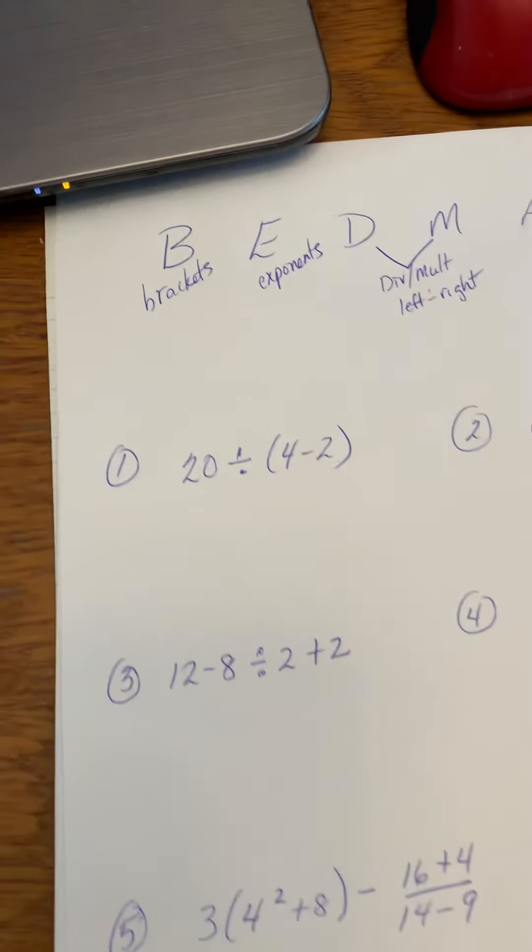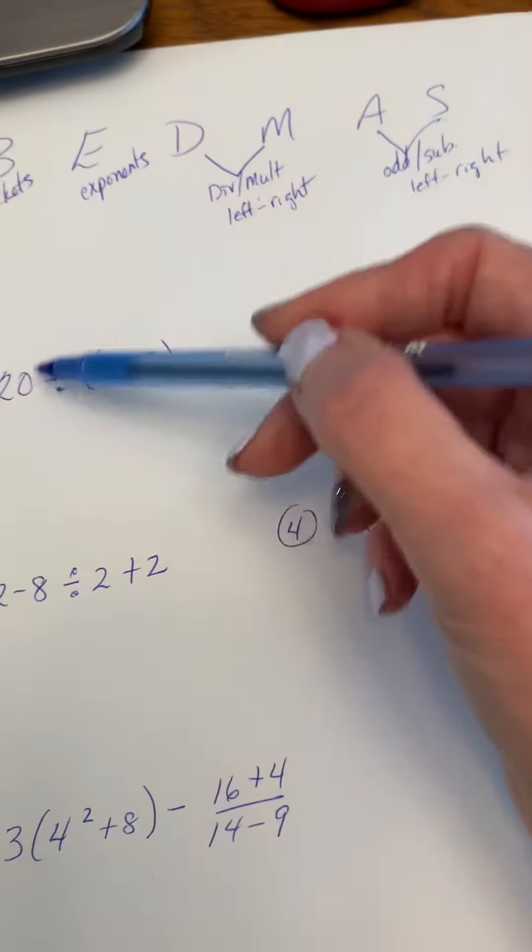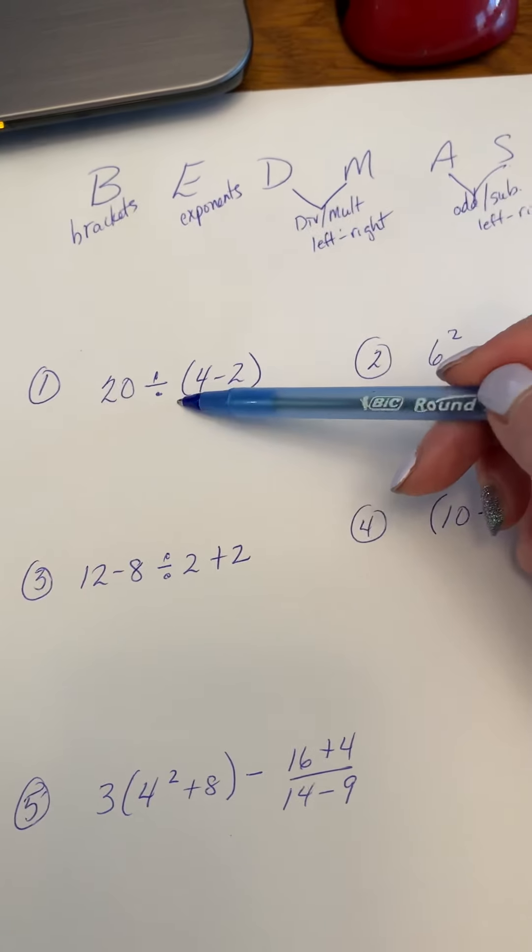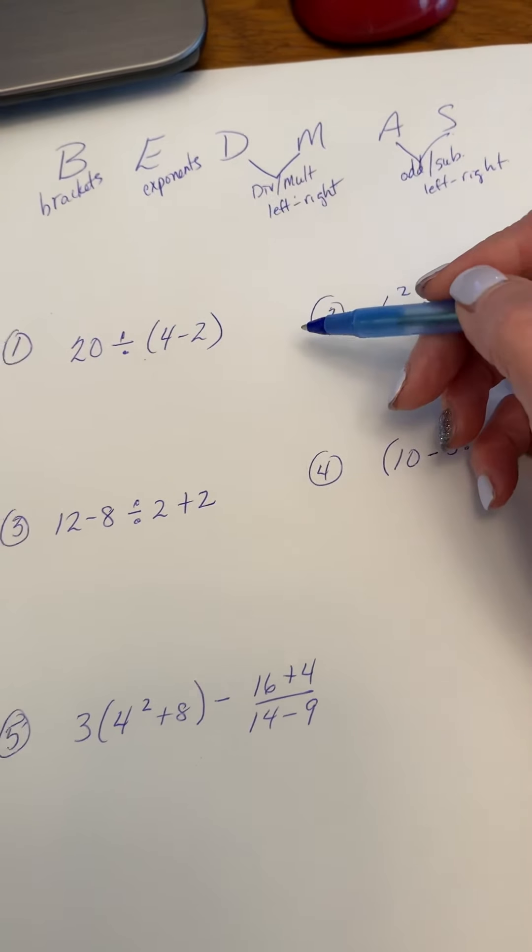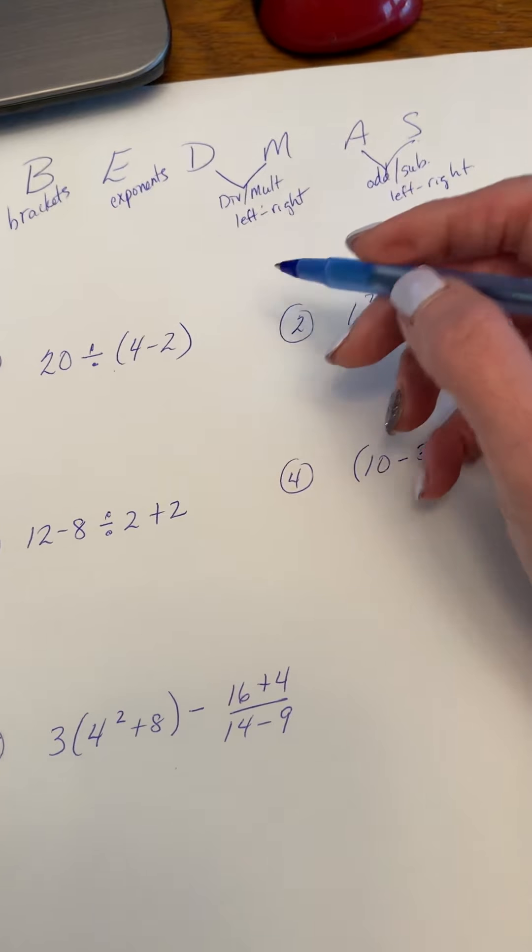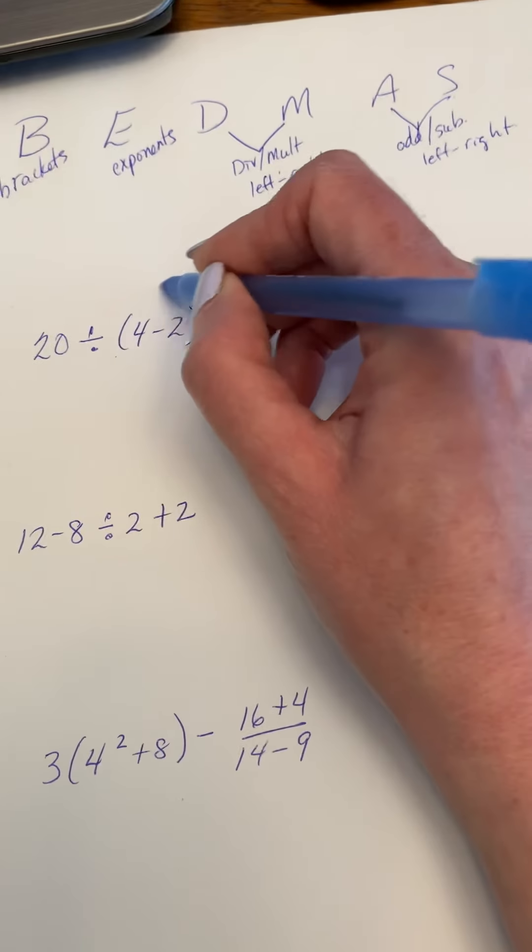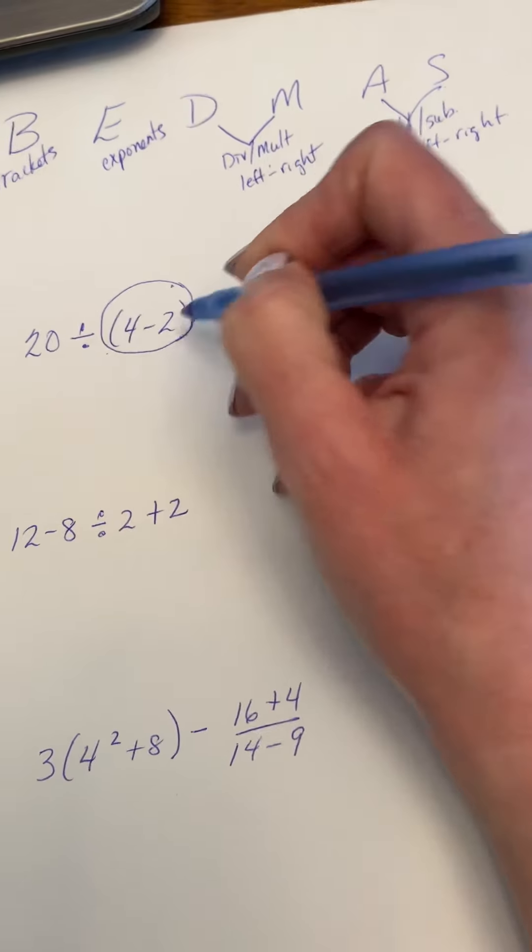When we take a look through this question, it says 20 divided by, and then in brackets 4 minus 2. If you were ever in my grade nine class, you have to circle the step that you're doing first. That's worth a mark actually. We're going to do the brackets first.